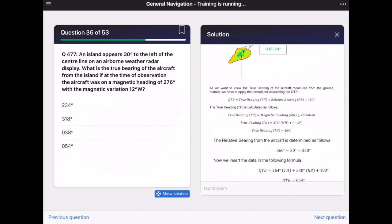And as the island appears 30 degrees to the left of the centerline, the relative bearing is 330 degrees. Simply 360 degrees minus 30 degrees.